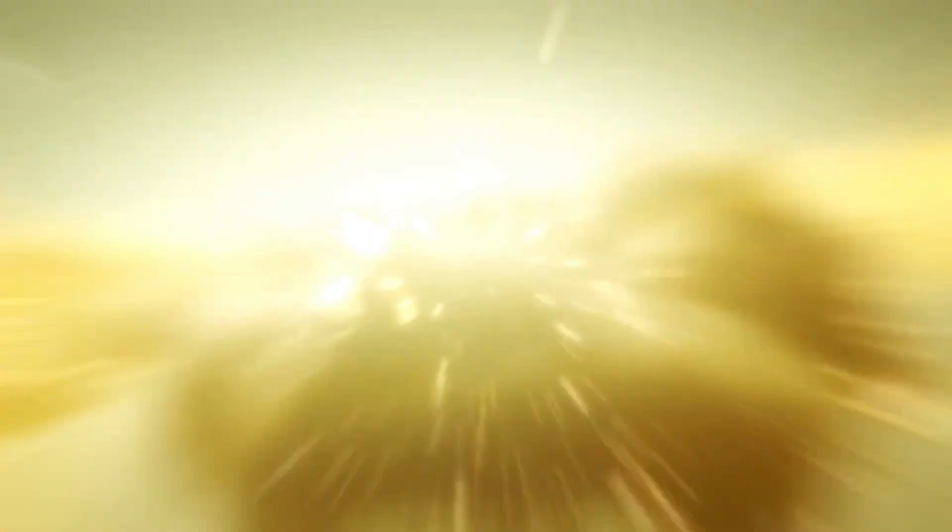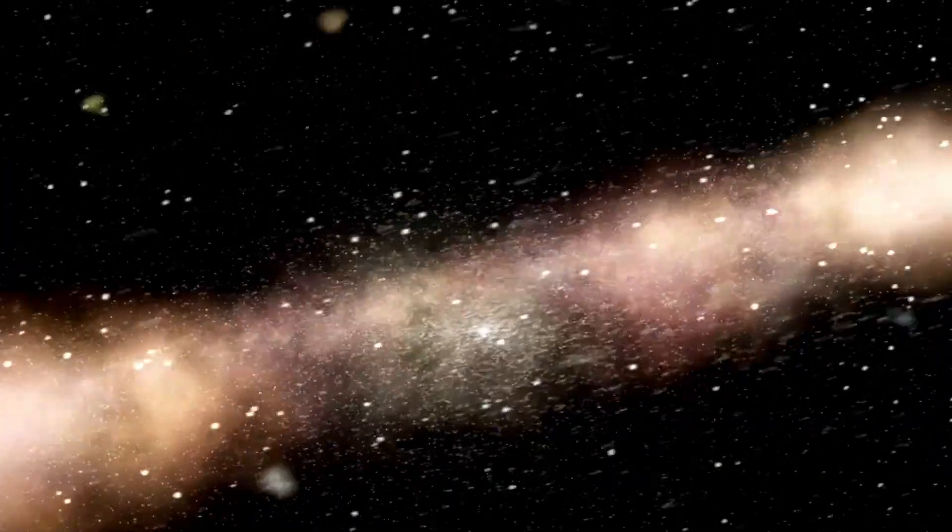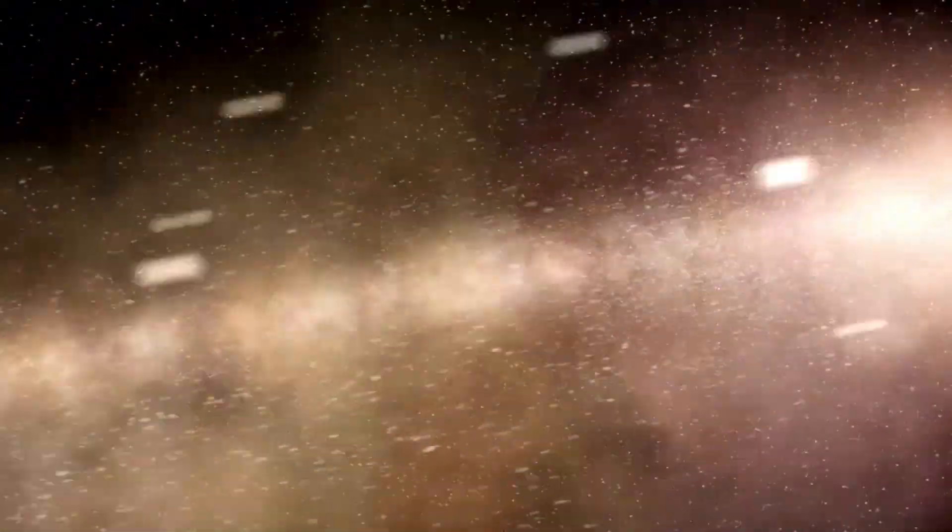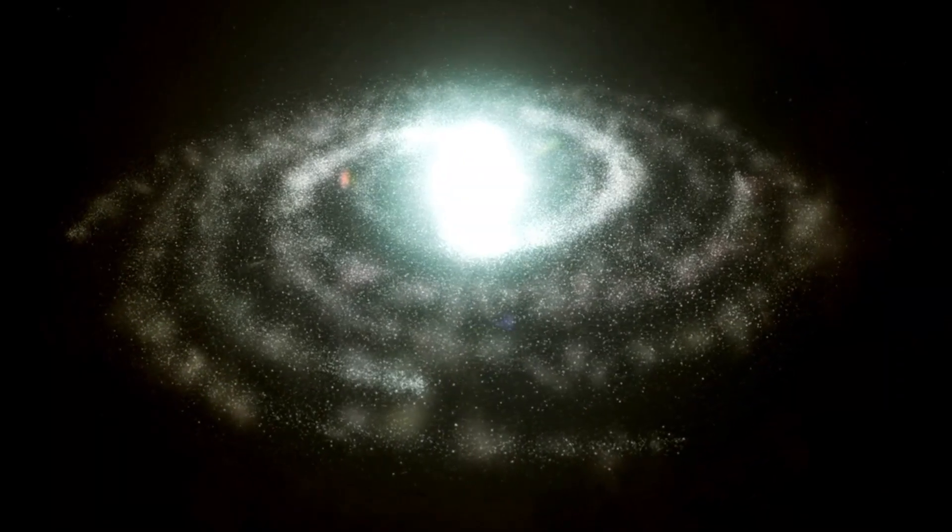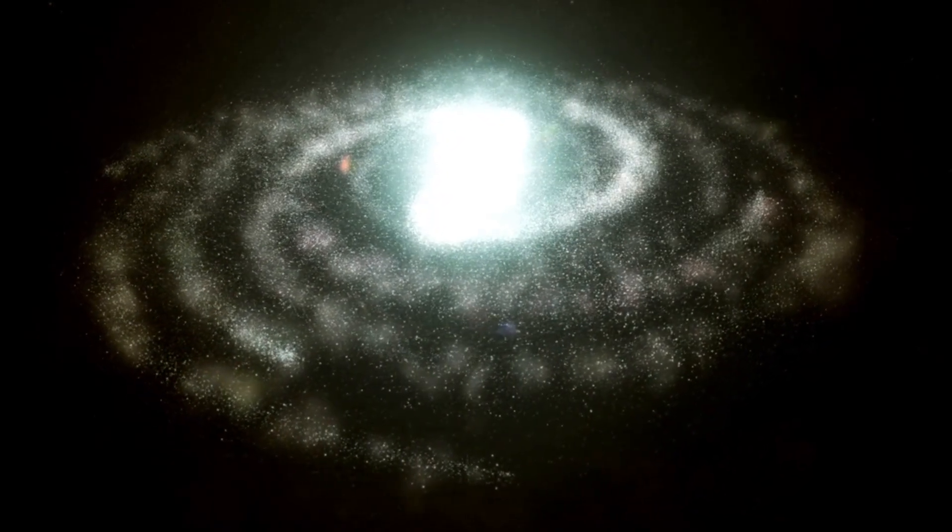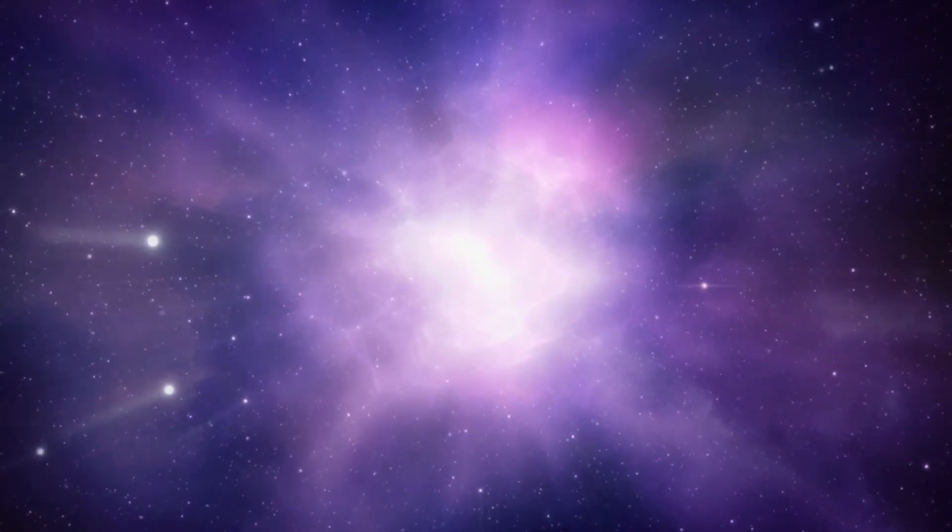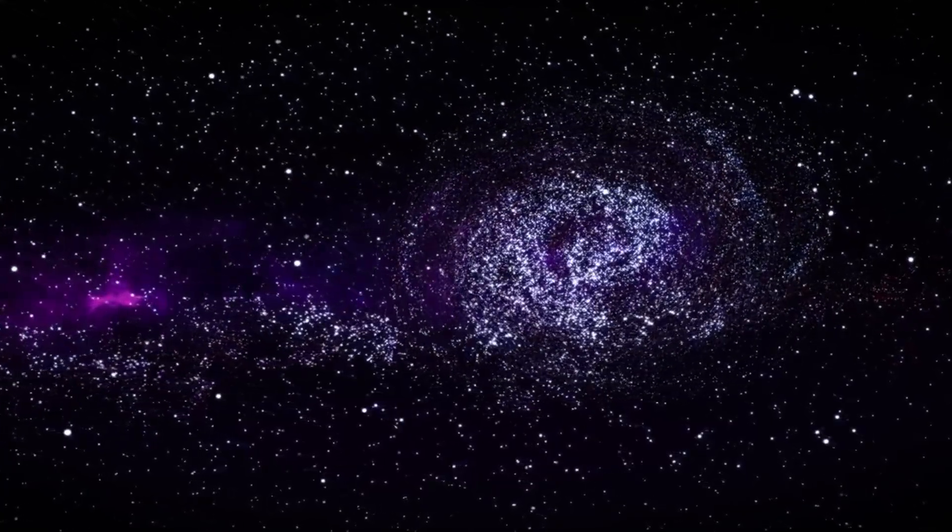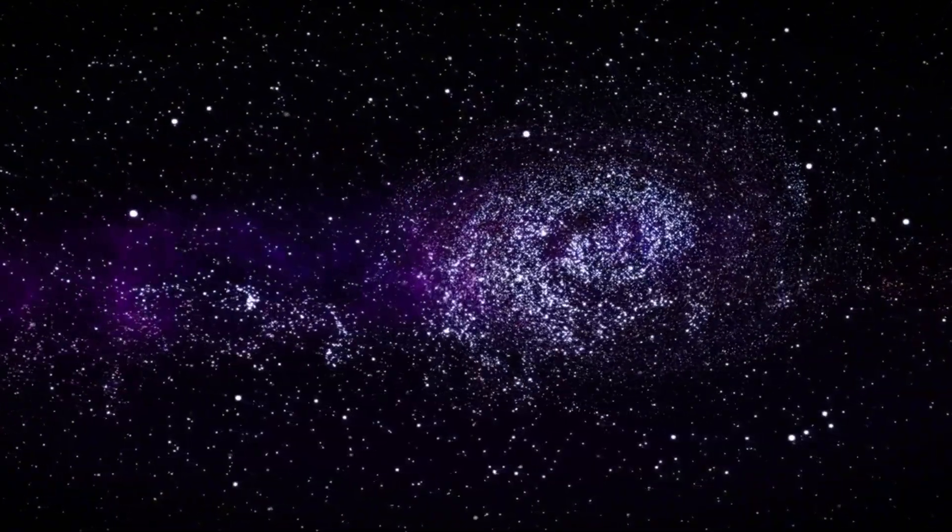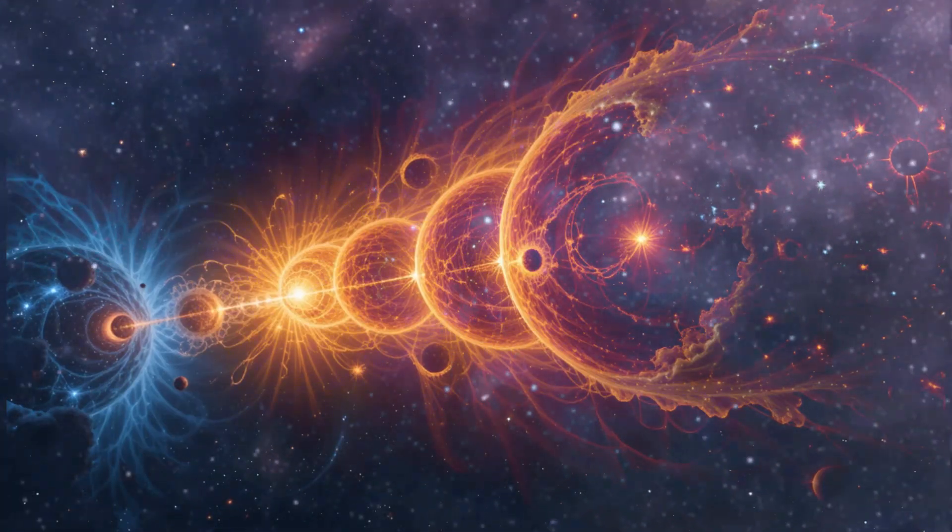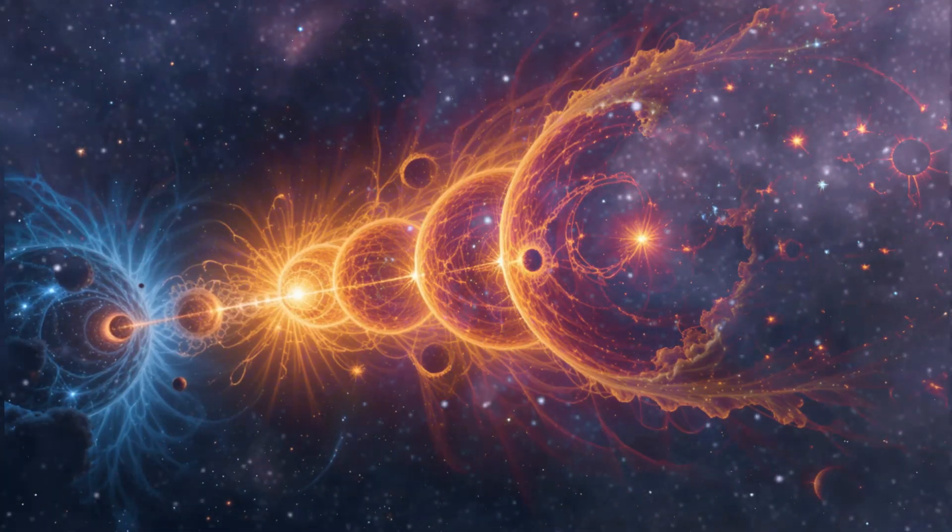As Proxima Centauri b orbits its host star, it experiences both day and night periods, much like Earth. During the day, the planet is exposed to intense solar radiation, while at night it cools down. Known for its fluctuating temperatures, the degree of this variation depends on the planet's composition. If Proxima Centauri b lacks a significant atmosphere, the temperature differences between day and night would be extreme, with scorching heat during the day and freezing cold at night.